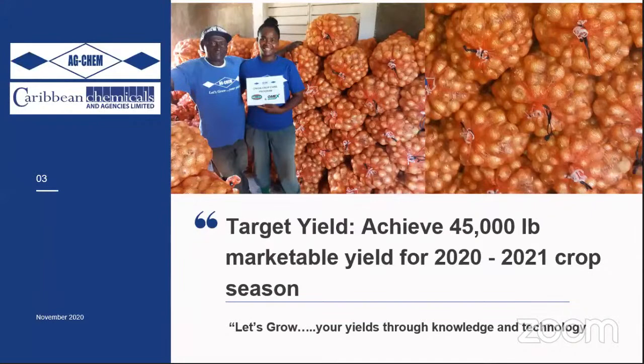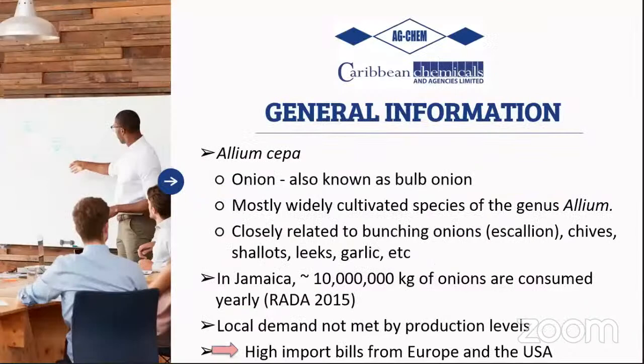From the last training, the target yield for the 2020 to 2021 cropping season was mentioned as 45,000 pounds per acre of marketable onion yield. This has been achieved before with the program and the aim is to achieve it again in the coming season.